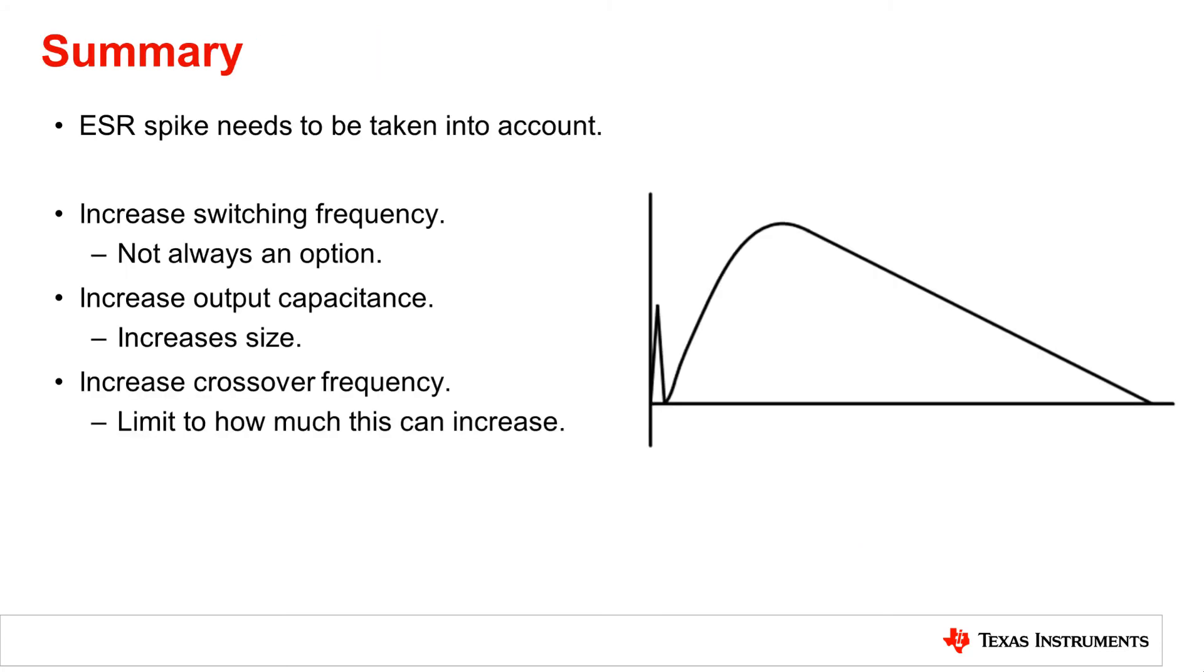In summary, there is a parasitic spike caused by the ESR that needs to be taken into account, as well as three different options that can reduce the amount of overshoot or undershoot that the design has, each of them with specific downsides.